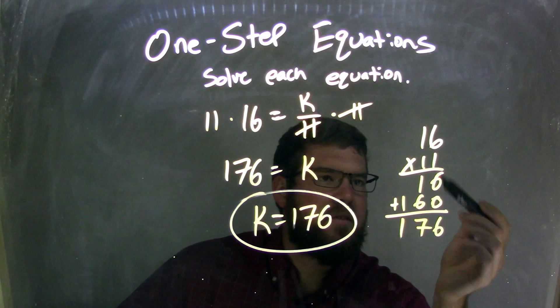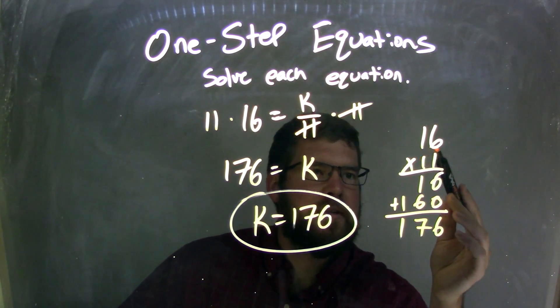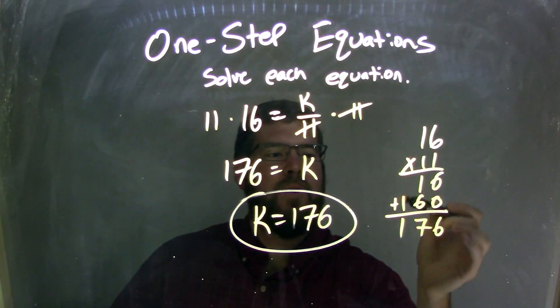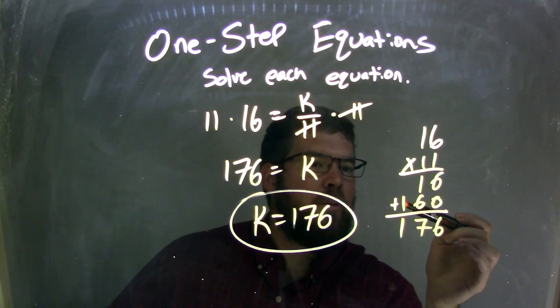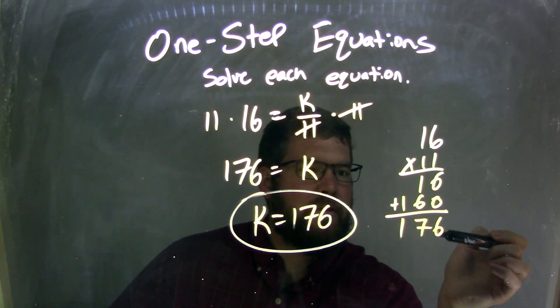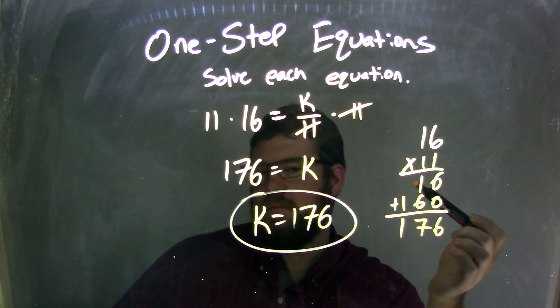1 times 6 is 6, 1 times 1 is 1, 0 place value, this 1 times that 6 is 6, 1 times 1 is 1. We add them together, 6 plus 0 is 6, 1 plus 6 is 7, 1 plus nothing is 1.